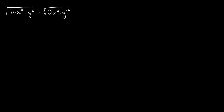In this case, the most obvious law of indices that is in our face is the law of square roots, or any roots actually. We know that taking the square root is essentially the same thing as taking a number to the power of 1 over 2. So we can rewrite this as 16 times x to the 8th times y to the 6th, whole to the power of 1 over 2, multiplied by 2 times x to the 6th times y to the power of minus 5, whole to the power of 1 over 2 as well.